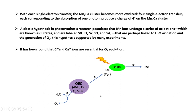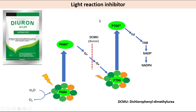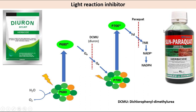Some herbicides inhibit the light reaction, such as DCMU and paraquat. DCMU blocks electron flow at the quinone acceptors of photosystem II by competing for the binding site of plastoquinone normally occupied by QB. Paraquat acts by accepting electrons from the early acceptors of photosystem I and then reacting with oxygen to form superoxide, which damages chloroplast components, especially lipids.